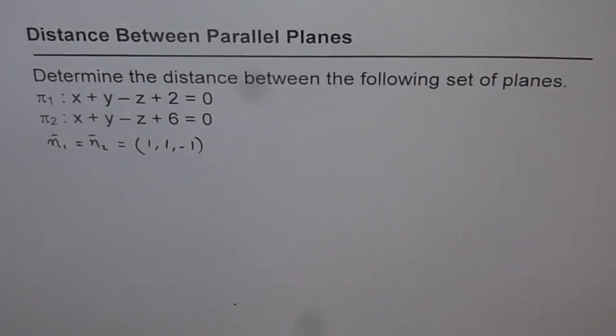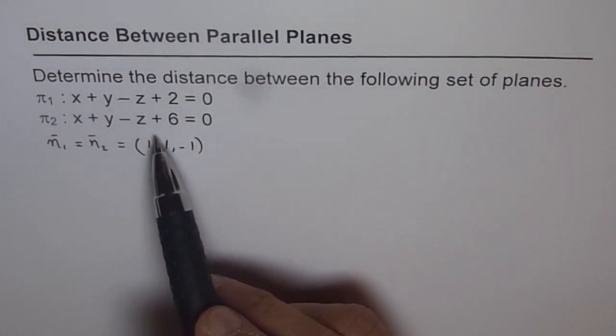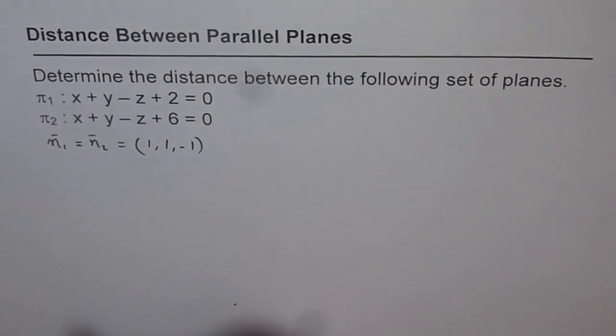Now, to find distance between two parallel planes, we need a point on one of the planes, so that we can find distance from that point to the other plane. That will be the distance between the planes.